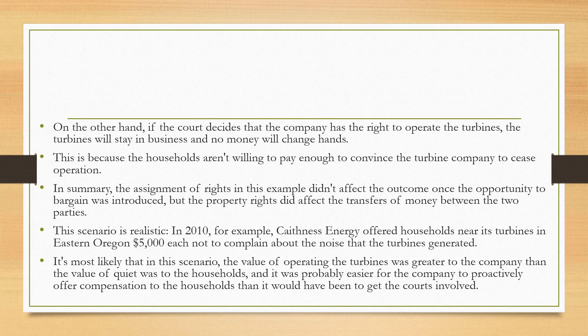If the courts decide that the company has the right to operate the turbines, the turbines will stay in business and no money will change hands, because households aren't willing to pay enough to convince the turbine company to cease operation. In summary, the assignment of rights in this example did not affect the outcome once the opportunity to bargain was introduced, but the property rights did affect the transfers of money between the two parties.